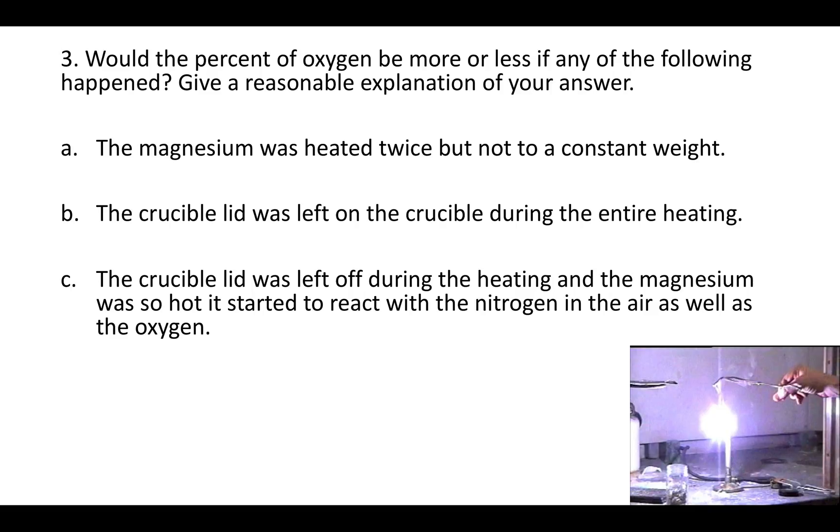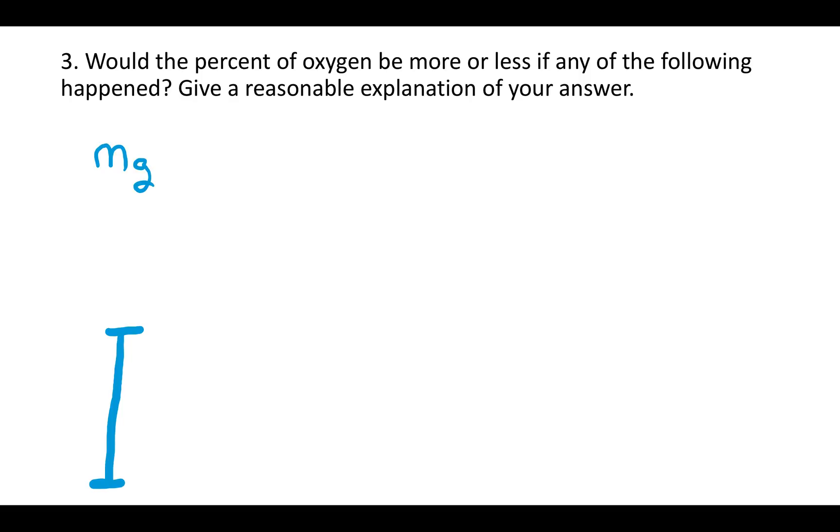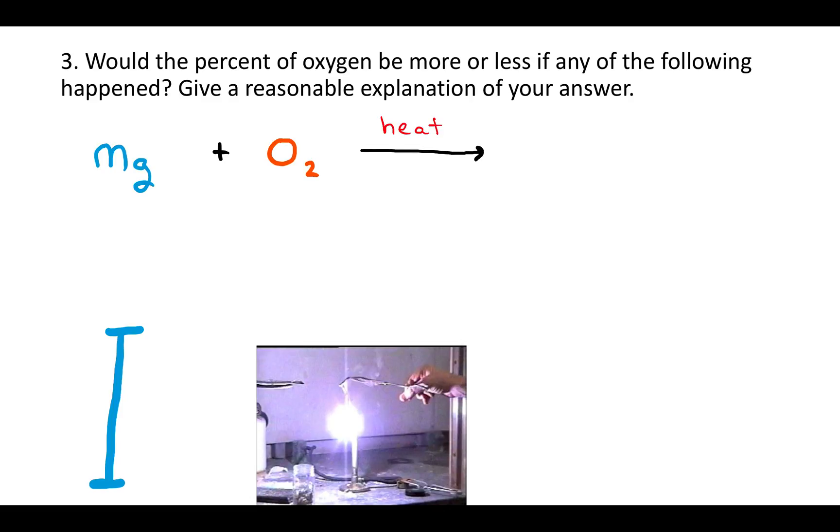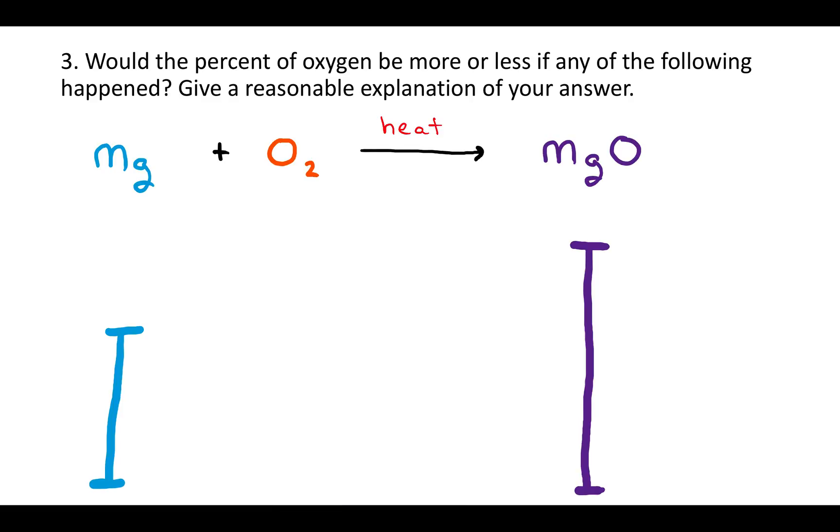For question three, question three says, would the percent of oxygen be more or less if any of the following happened? Give a reasonable explanation for your answer. And then they give us three scenarios. Let's just recap what we did in the experiment. We took a magnesium sample, we heated it up in the presence of oxygen, and we got that white powdery product, magnesium oxide. And I'll just balance that equation. And so the difference between those is the amount of oxygen that we added. The oxygen is coming from the air. The bigger the difference, the more oxygen we added. The smaller the difference, the less oxygen we added.